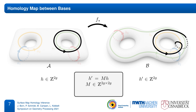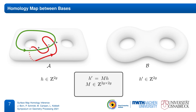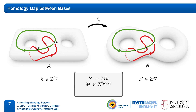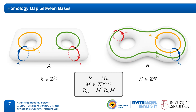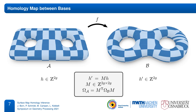However, not every integer matrix corresponds to a homology map that is actually induced by some homeomorphism. The class of valid homology maps can be characterized by an additional constraint on M, which basically states that if two cycles intersect a certain number of times on A, then their images on B must have the same intersection number. This property can be concisely stated in terms of two additional constant matrices omega_A and omega_B, which contain the pairwise intersection numbers of the homology basis cycles. Every matrix M that fulfills this constraint describes a homology map induced by some homeomorphism from A to B.